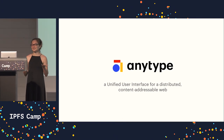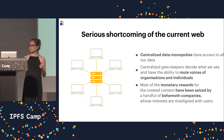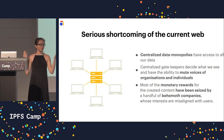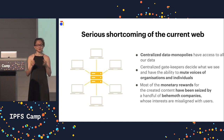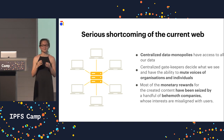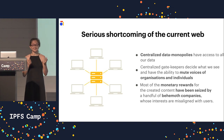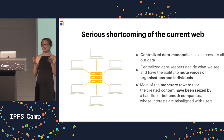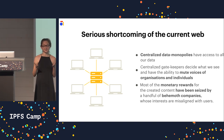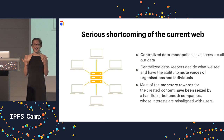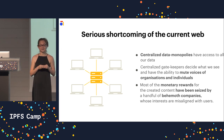It's a unified user interface for a distributed content addressable web. We all know that the web is magnificent, but of course there are some serious shortcomings. Centralized data monopolies have access to all our data and can read our private communication, and with advances in AI, this creates a large risk.